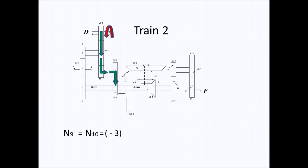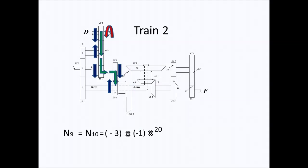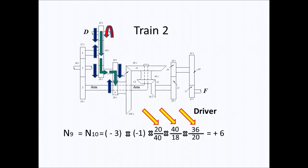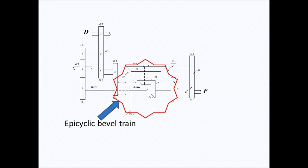For Train 2, we again have negative 3 for the rotation of D, multiplied by negative 1 — derived from the relationship of the direction of the initial and final shafts. We multiply by the number of teeth of the driver gears over the number of teeth of the driven gears, giving us plus 6 as the output of Train 2.